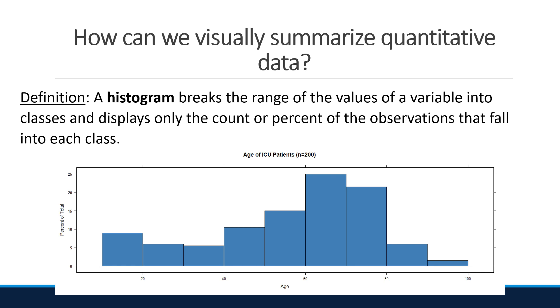A histogram of the data is provided below for the variable age. Recall that our goal is to describe the data. Looking at the plot, we can quickly see the following. The ages range from approximately 10 to 100.